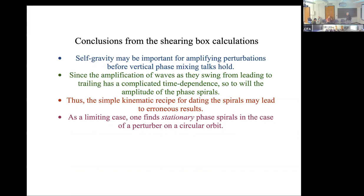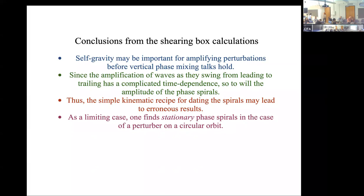Thank you, Larry. Are there any questions? The question is: can perturbations be induced from horizontal perturbations? One reason is because the phase spirals have this vertical profile, and the other is because spirals can mix orbits with different angular momentum, and since the vertical frequency depends on angular momentum, that would also create a perturbation in the vertical spectrum. In the shearing box the vertical frequency doesn't depend on X.